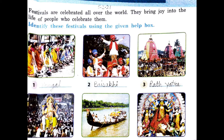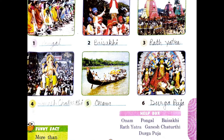The third one is Rath Yatra. It is associated with Lord Jagannath, held at Puri in the state of Odisha. The fourth one is Ganesh Chaturthi. It is also known as Vinayaka Chaturthi.